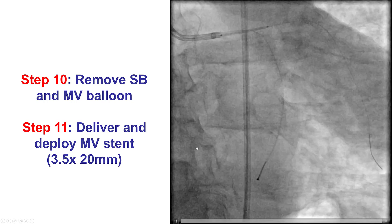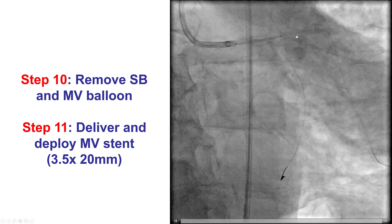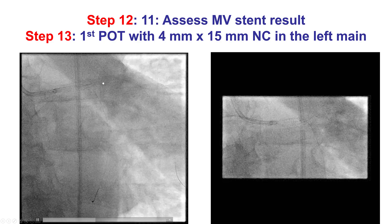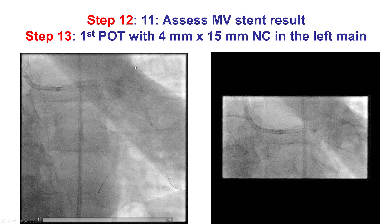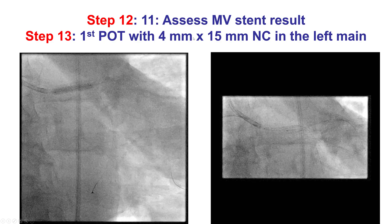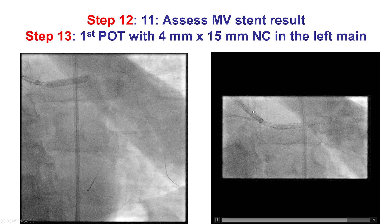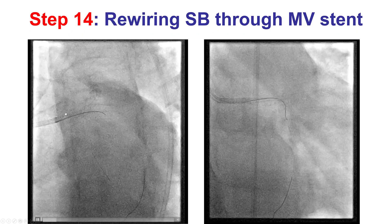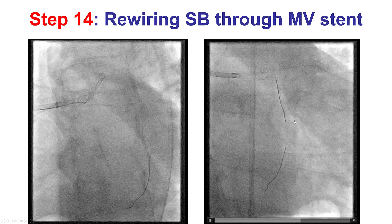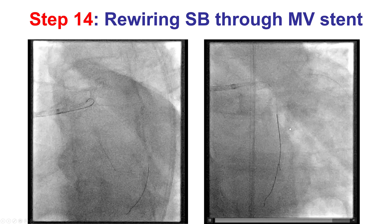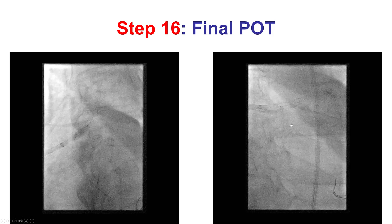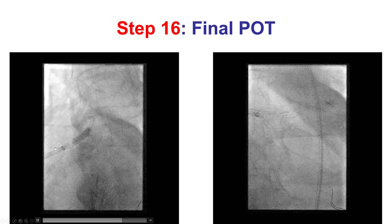We then removed the side branch balloon and delivered a stent from the left main into the LAD, 3.5 by 20 mm. IVUS confirmed the stent appeared well expanded. We then performed the proximal optimization technique with a 4.0 mm balloon in the left main. After that, we rewired into the circumflex using a workhorse guide wire that successfully crossed, performed the second kissing balloon inflation, performed a final proximal optimization technique.